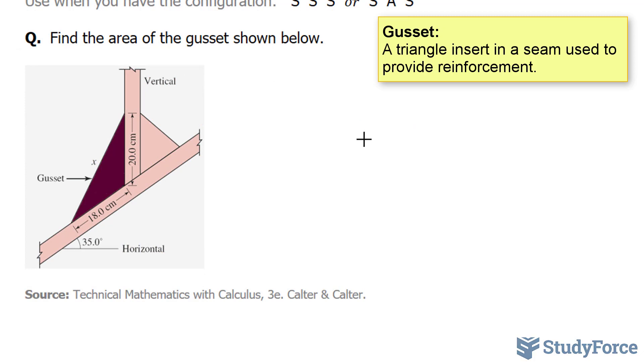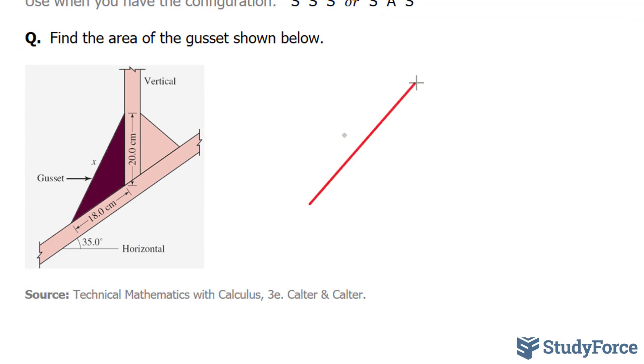The way I see this is that I have a line, which we will label x for our unknown, and this is connected to two other lines. One that is 20 centimeters, 20.0, and another that is 18.